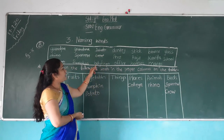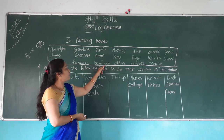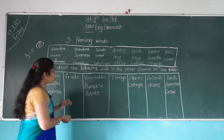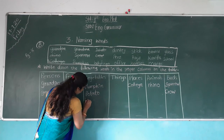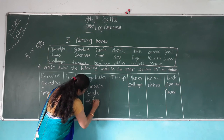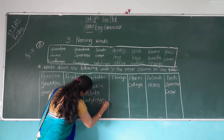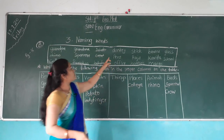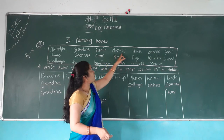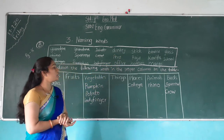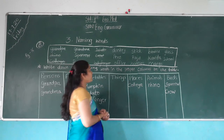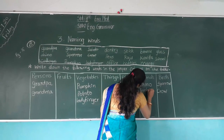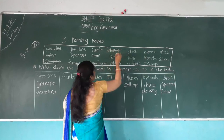Read the spelling — L-A-D-Y-F-I-N-G-E-R — Lady finger. Lady finger is a vegetable, so write it in the vegetables column. And cut it. Read the spelling — D-O-N-K-E-Y — Donkey. Donkey is the name of an animal, so write it in the animals column — D-O-N-K-E-Y — and cut it.